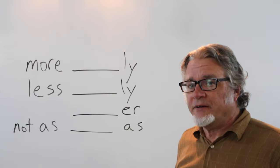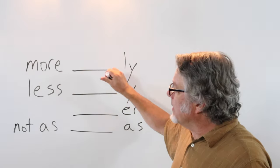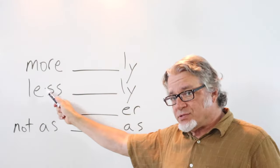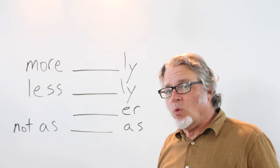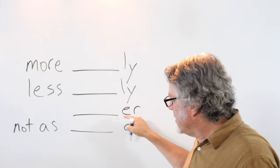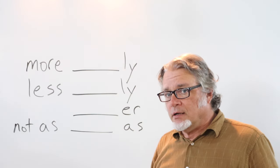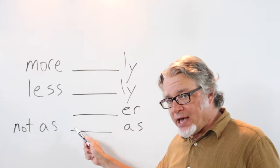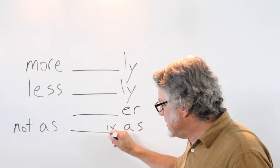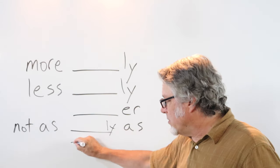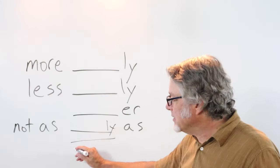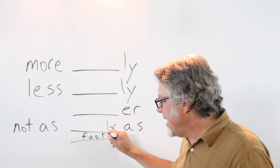To form a comparative adverb, you can use more and then the adverb with an ly ending, or less and then the adverb with an ly ending. Or some adverbs don't use ly. In that case, just use er. Or you could use not as, and then the adverb here. The adverb could have an ly ending or no ending at all. Not as, for example, not as fast as.